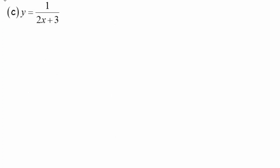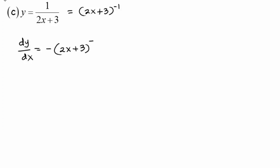Now let's try question C. Before we differentiate, we convert the function to become (2x + 3) to the power of negative 1. Differentiating this function gives negative (2x + 3) to the power of negative 2. Don't forget to differentiate inside the bracket, which gives us 2. So the final answer is negative 2 times (2x + 3) to the power of negative 2. That is our first order differentiation.